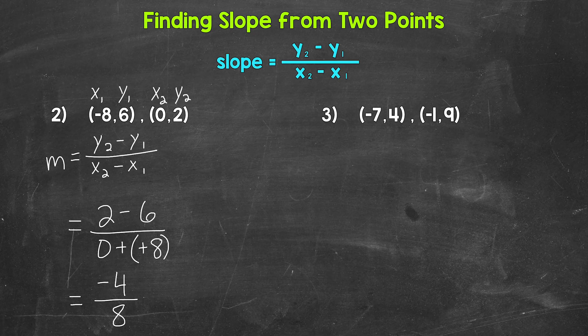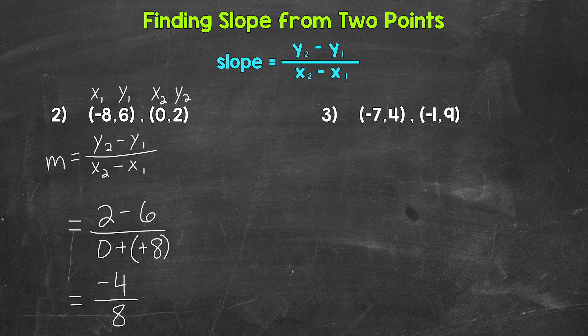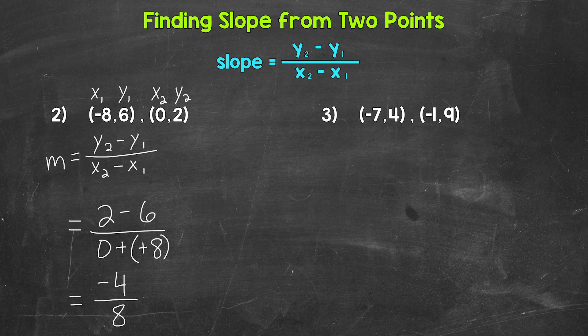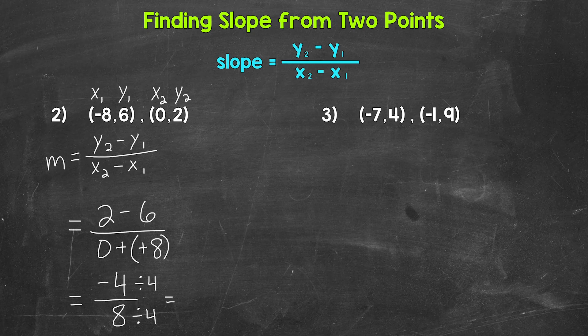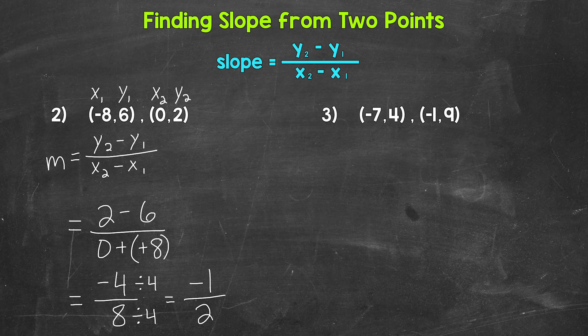Negative 4 eighths. Now this fraction can be simplified. And when it comes to slope, we want to look to simplify if possible. The greatest common factor between negative 4 and 8 is 4. So let's divide both negative 4 and 8 by 4. Negative 4 divided by 4 gives us negative 1. And 8 divided by 4 gives us 2. So our final simplified slope is negative 1 half.